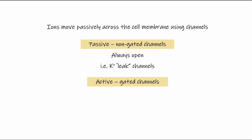The other type of channels are active channels, also called gated channels. The gate can either be opened or closed, which affects the ability of ions to move across the membrane.